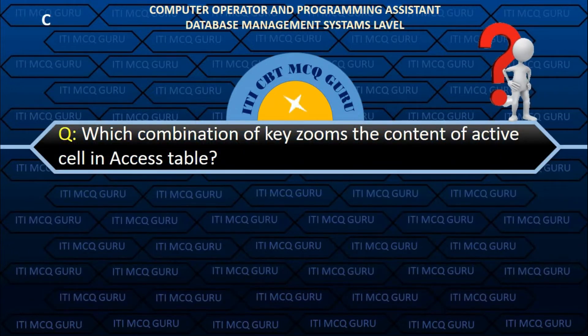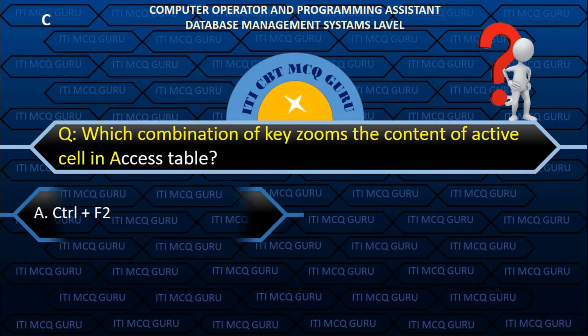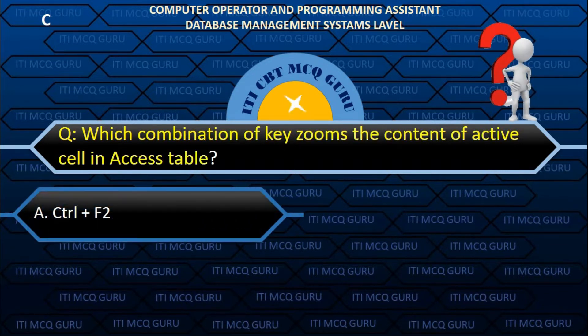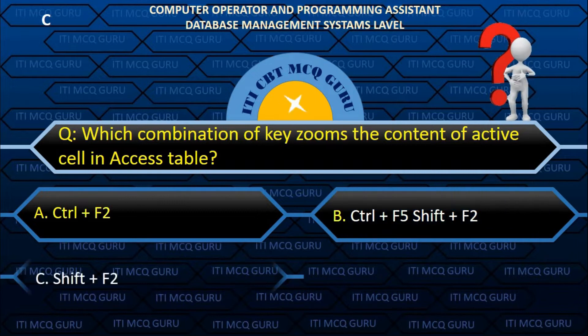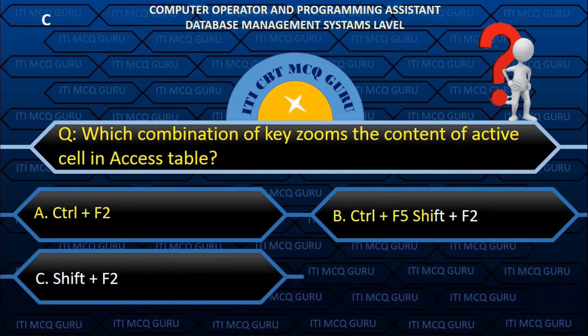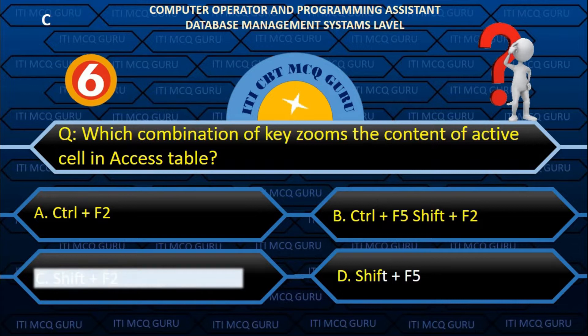Which combination of keys zooms the content of the active cell in an Access table? C. Shift + F2.